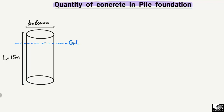For this example, a column is given to us with the following dimensions: the diameter of the pile is 600 millimeters, or simply 0.6 meters, and the length of the pile is 15 meters. Here is the ground level of the pile, and below the ground level the pile has been dug into the earth.